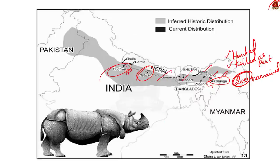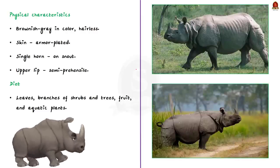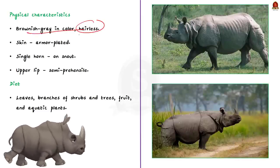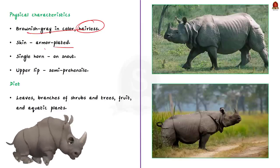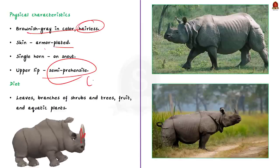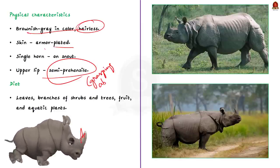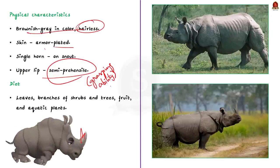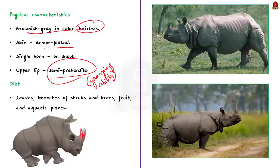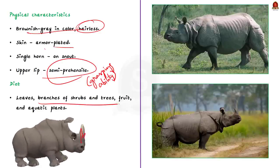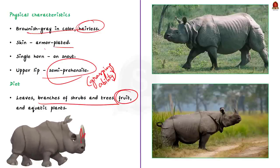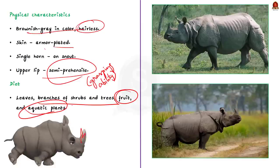So now let us see some of the facts about its physical characteristics. Indian rhinos are brownish gray in color and they are hairless. They have skin that appears to be armor plated. A single horn sits on top of their snout and their upper lip is semi prehensile. Here prehensile means capable of grasping. Now talking about their diet, they primarily graze with a diet consisting almost entirely of grasses as well as leaves. They also eat branches of shrubs and trees and they also like fruits and aquatic plants.